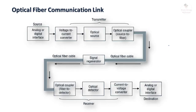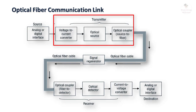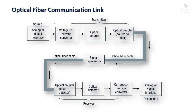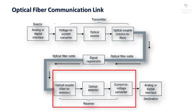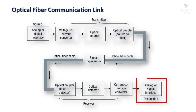Let us briefly go through the elements involved in an optical fiber communication link. This block diagram shows the optical fiber communication link. Initially the information originates at the source, then the transmitter sub-blocks process the input data. The function of the transmitter is to couple the information into the optical fiber communication link and convert the signal into a time-varying form that matches the properties of the channel. The channel is the optical fiber cable. At the receiver side, an optical detector converts the incoming optical signal into an electrical signal, which is then processed and converted back into original form.